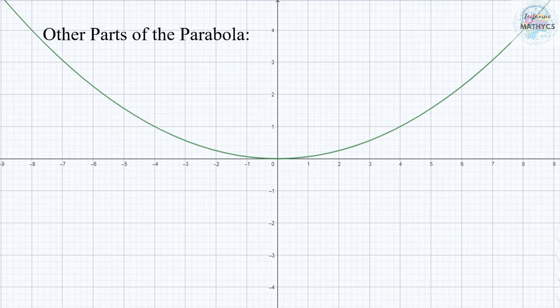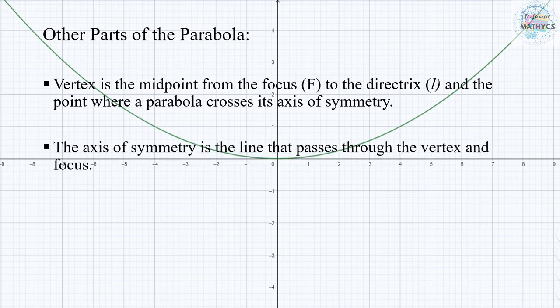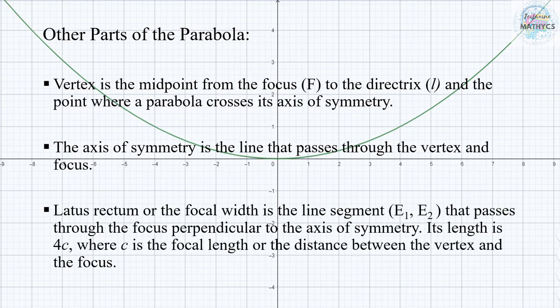The following are the parts of a parabola. The vertex is the midpoint from the focus to the directrix and the point where a parabola crosses its axis of symmetry. The axis of symmetry is the line that passes through the vertex and focus. The latus rectum or focal width is the line segment that passes through the focus perpendicular to the axis of symmetry; its length is 4C, where C is the focal length or the distance between the vertex and the focus.